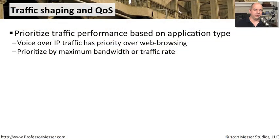Our modern networks have hundreds of different applications flowing through them. One problem you run into is when somebody starts up a big file transfer or watches streaming media — it may have an effect on other applications that need bandwidth as well. That's when network administrators use different techniques to manage the throughput of applications on the network.